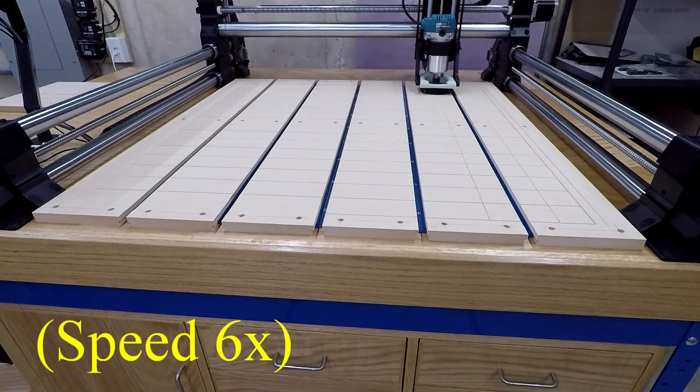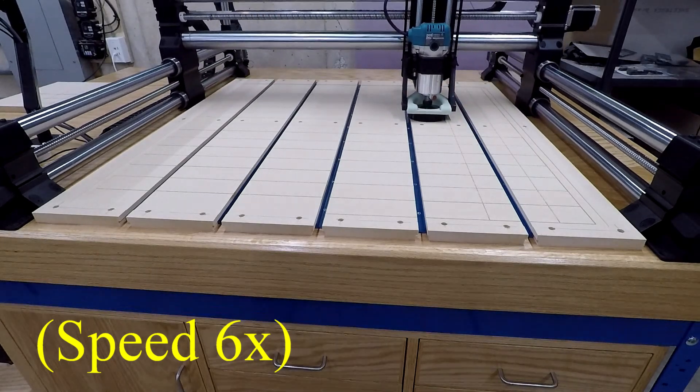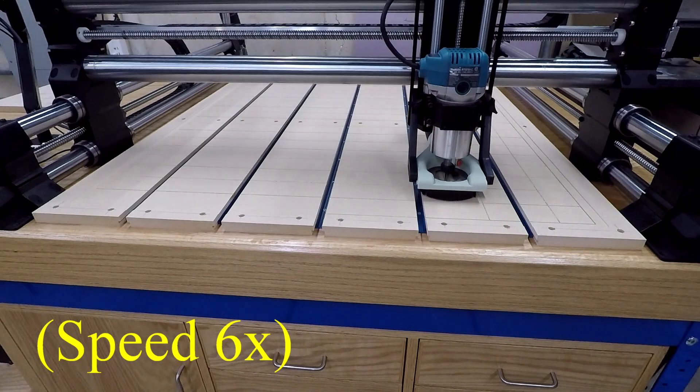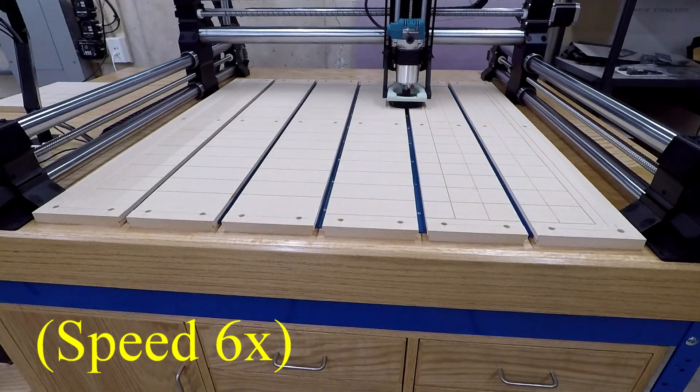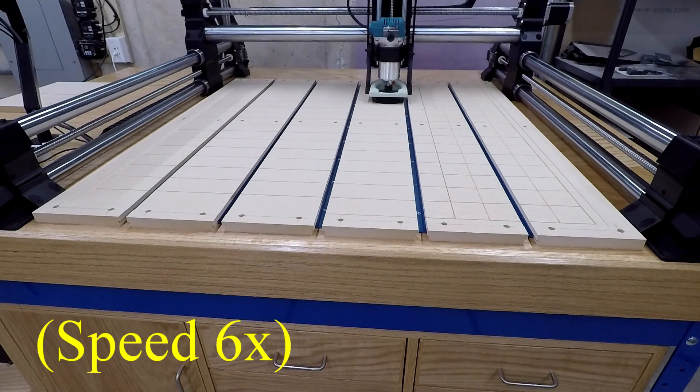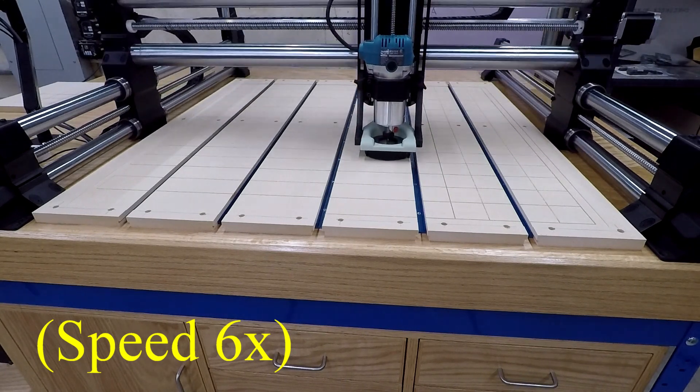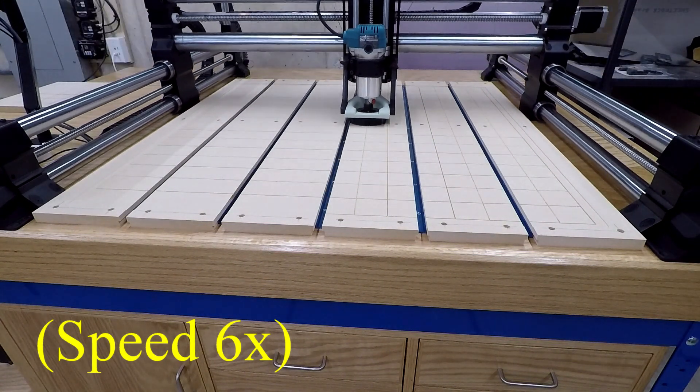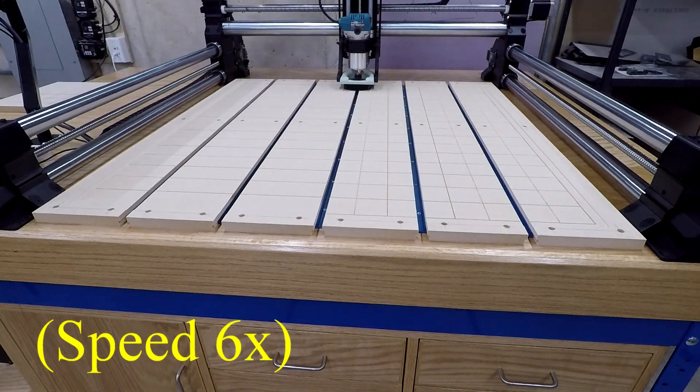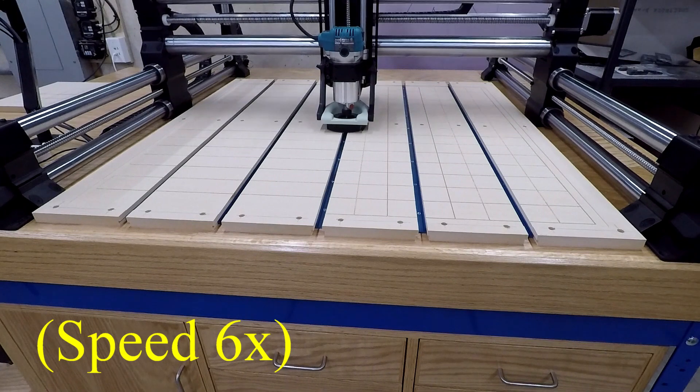One thing when I planned the spoil board out with the blue T-tracks, which are going to help me clamp, I put those on six inch centers which of course lined up exactly with the two inch centers on the lines here. I can change that in the future. I may reduce the number of T-tracks.